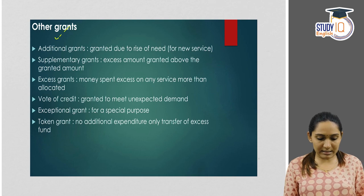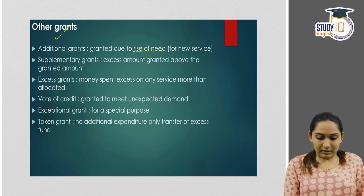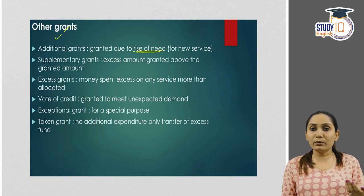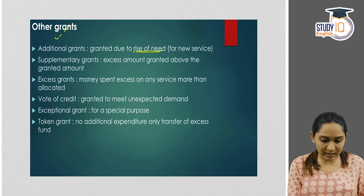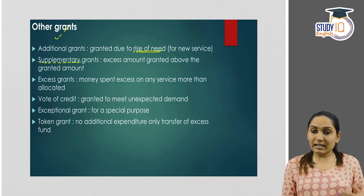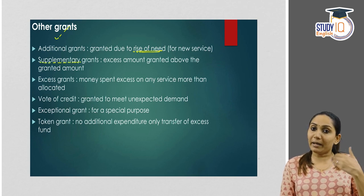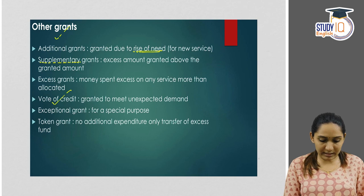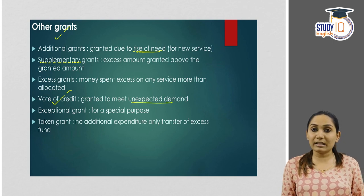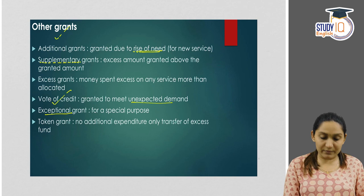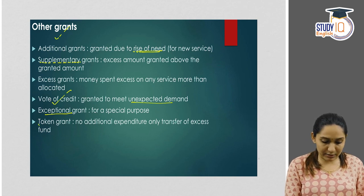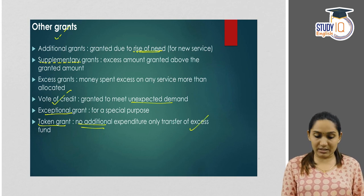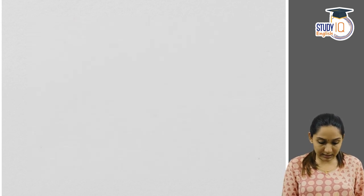Apart from the main demand for grants, there are other types of grants. Additional grants are given when a new demand or need arises. Supplementary grant is the excess amount granted above the originally required amount. Vote of credit is to meet unexpected demand. Exceptional grant is for a special purpose. Token grant involves no additional expenditure, only the transfer of excess funds.